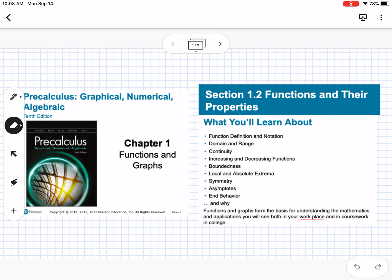So this is section 1.2, which is functions and their properties. This is going to cover function definition and notation, domain and range, continuity, increasing and decreasing, boundedness, local and absolute extrema, symmetry, asymptotes, and end behavior. This is a huge section. There's a lot of stuff in this section, so hopefully a lot of it is stuff you've seen before and remember, but there is a lot to this.